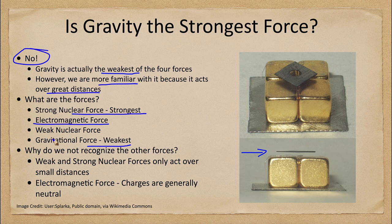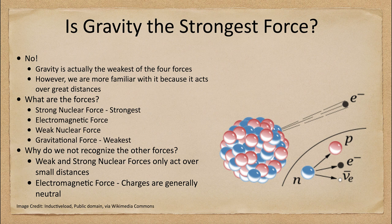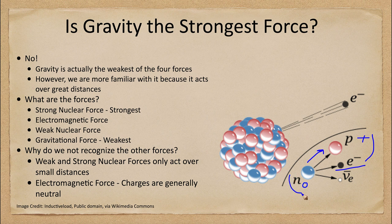The weak nuclear force is stronger than gravity but weaker than the other two forces. It has to do with nuclear decay — in the weak nuclear force, a neutron within an atom decays into a proton, changing its charge since a proton has a positive charge and a neutron has none. To keep the charges balanced, an electron is also formed, giving you no net charge on either side. A neutrino is also produced. So the weak nuclear force governs nuclear decay.